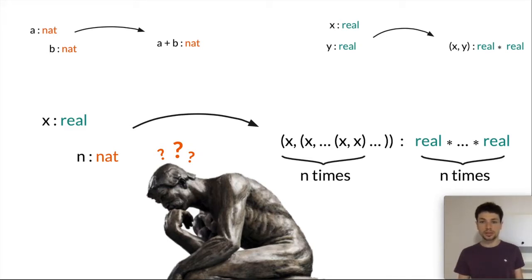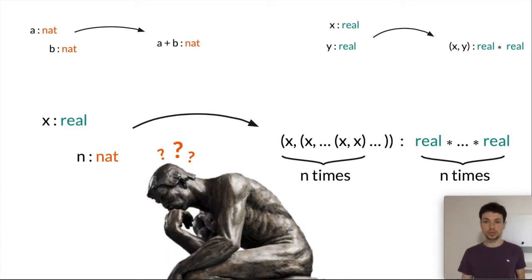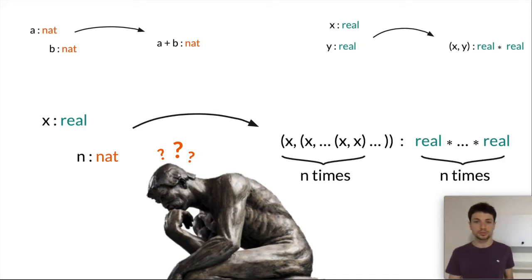This limitation of simple type theory appears in the proof of the formalization of the existence of algebraic closures. It's not the only issue, but it's the main one we will focus on in this talk.